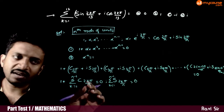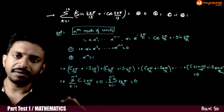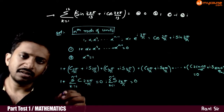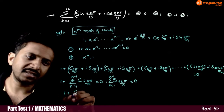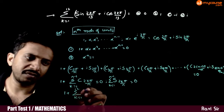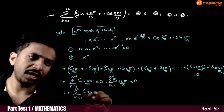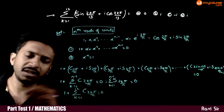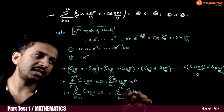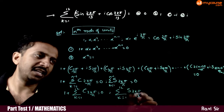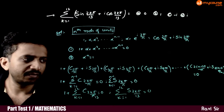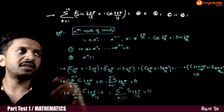These results are valid for any n. In our question, n is 13. So substituting n equals 13: 1 plus sigma k equals 1 to 12 of cos(2kπ/13) equals 0, and sigma k equals 1 to 12 of sin(2kπ/13) equals 0. Therefore, sigma k=1 to 12 of cos(2kπ/13) equals minus 1.